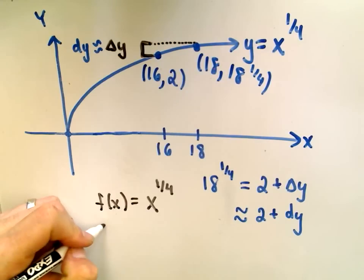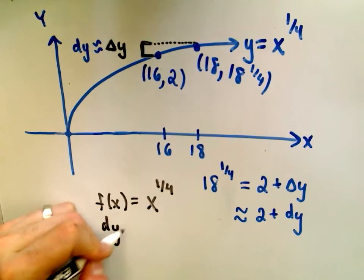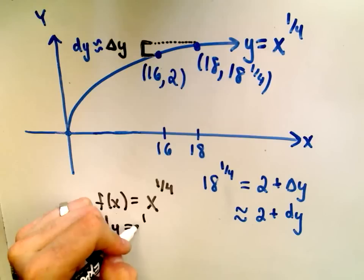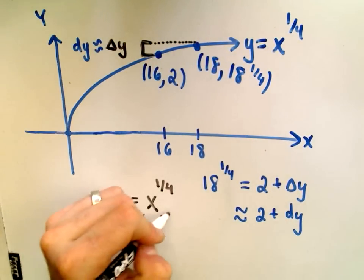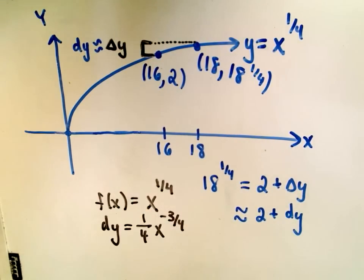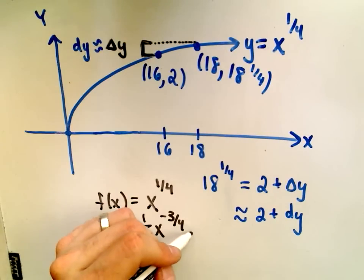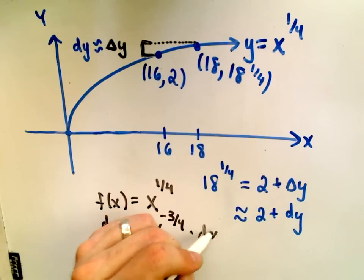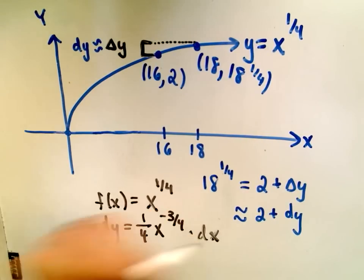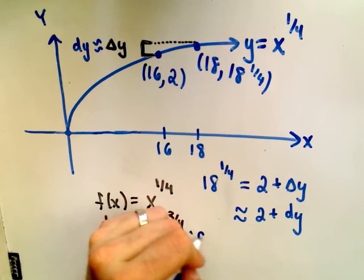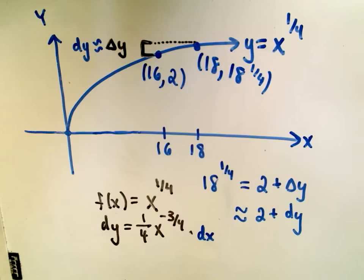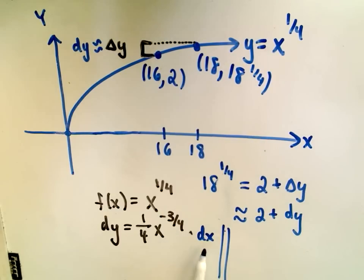If we take the differential dy, the derivative will be 1/4 x^(-3/4), and then we have to multiply that by our value dx. Now I've got a formula for dy. We need to plug something in for x and something in for dx.